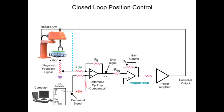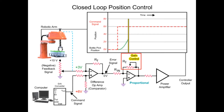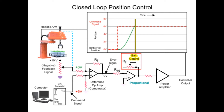To increase the response time of the robotic arm to the command signal, the gain of the proportional amplifier can be increased. However, increasing the gain of the op-amp has a disadvantage where the robotic arm overshoots the targeted position.